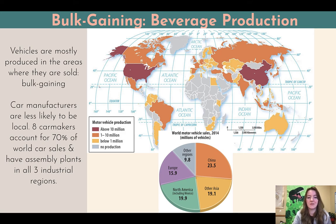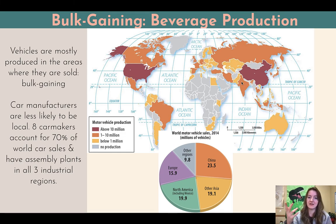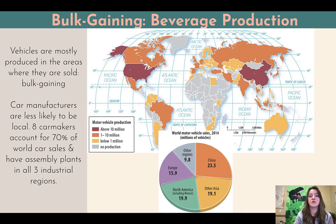This next map is vehicles — auto manufacturing, not beverage production, but still bulk gaining. Vehicles are mostly produced in areas where they're sold. The choropleth map shows darkest colors above 10 million, then 1 to 10, below 1 million, or no production. Where we drive the most cars and have huge numbers of people driving, we have the greatest motor vehicle production. India has the second highest population in the world but significantly fewer people actually drive a car. In Southeast Asia they tend to drive a lot more motorbikes — motorcycles or scooters — because they're cheaper, more efficient, and you can fit more of them on the road.